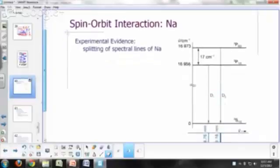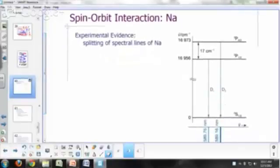Here's one experimental evidence of spin-orbit interaction. If you look at the spectral lines for sodium, that bright yellow light of sodium that you see at around 589 nanometers,